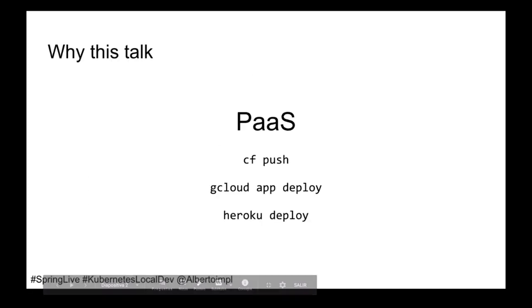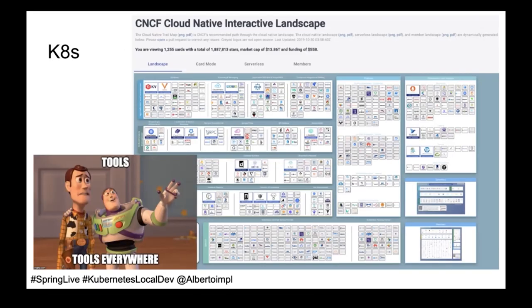This is important because when using a platform as a service, deploying to production is just one CLI command away. All the complexity is hidden from us if we're willing to structure our application in a specific way. In Cloud Foundry it's CF push, in Google App Engine it's gcloud app deploy, and the same for Heroku. In the Kubernetes world, things are a bit different — we have more control, but that friendly experience is going away. For each step, we'll have different tools, which is great for swapping components, but we have a much harder learning curve.